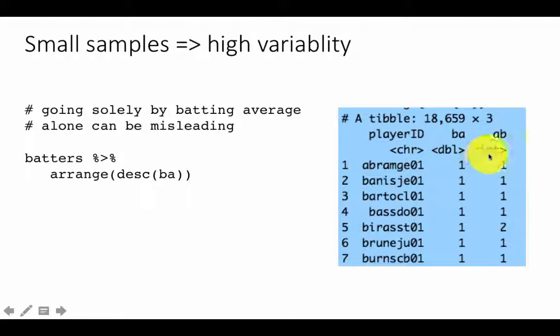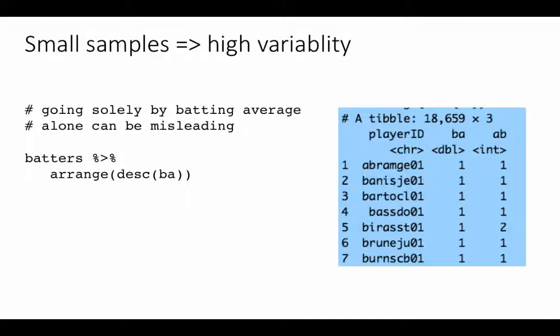If you look at the data, the top people have high batting averages — in fact they all have batting averages of one. But they've also played just once or twice; they have not played too many times. These could just be fluke occurrences — they didn't play too many times, they just happened to get a couple of hits. This is as opposed to people who have been at bat five or six thousand times and still have comparatively high batting averages.